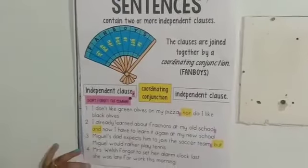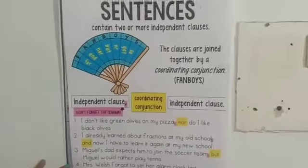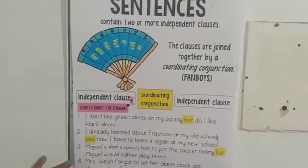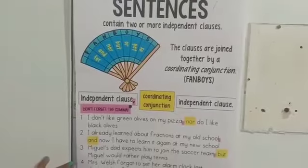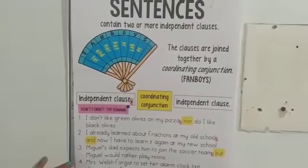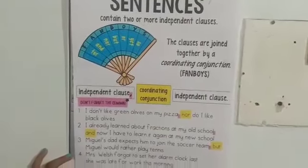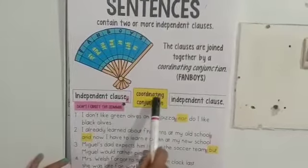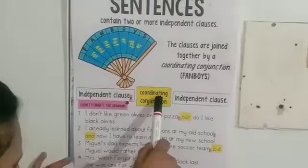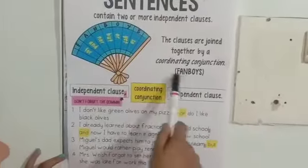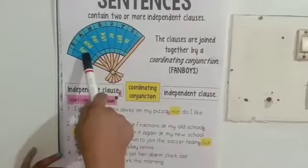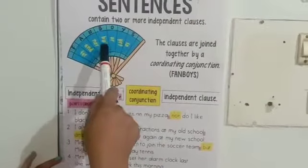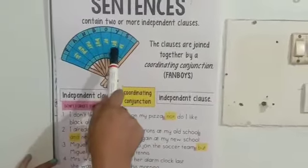Don't get confused with subordinating conjunctions. You have many subordinating conjunctions, but you have only seven coordinating conjunctions: for, and, nor, but, or, yet, and so.